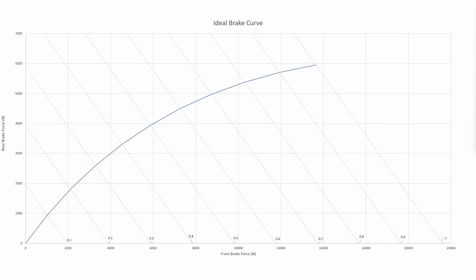Here we see a typical ideal brake curve. The brake force on the front axle is along the horizontal axis, and the brake force of the rear axle is along the vertical axis. These diagonal lines represent different types of surfaces — in particular, they represent the friction coefficient between our tires and those surfaces.